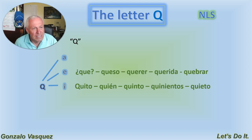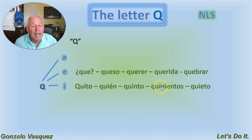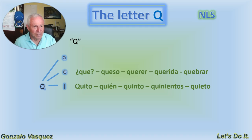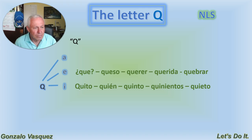Quinto — that's an ordinal number, the fifth. Quinientos — same thing, the number five hundred. Quieto — don't move, stand still. That's what you say when you're talking to kids moving around a lot: 'Hey, stop, be quiet, freeze.' In Spanish we say quieto.